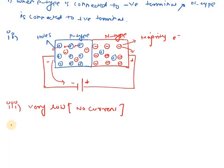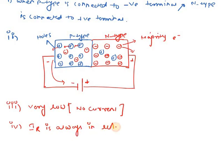Considering typical values, the reverse current IR is always in microamps. Remember, in case of forward bias it was milliamps — now in case of reverse bias it is in microamps.